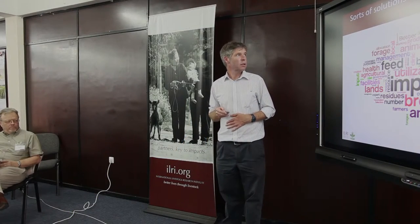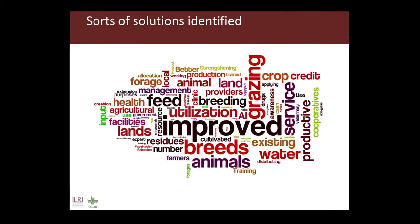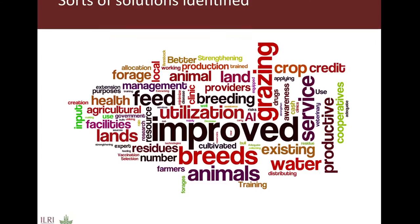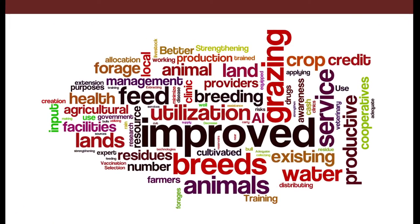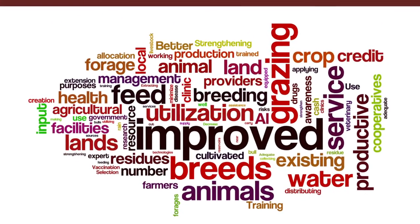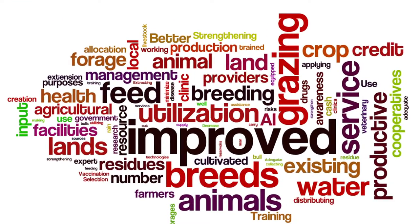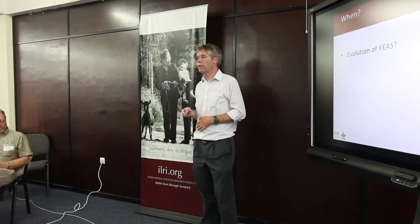Also, the solutions identified. I did a tag cloud from the Africa Rising reports of some of the things that farmers mentioned around solutions. And you can see some of it's around feed, some of it's around breeding, around credit, water — a whole range of things. Then when?